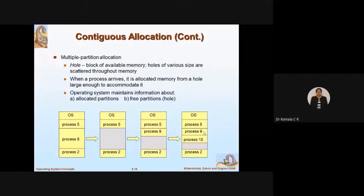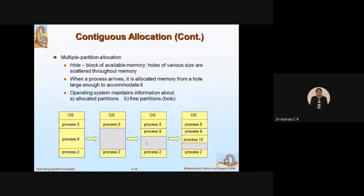Next is multiple partition allocation. A hole is a block of available memory. For example, in the first diagram, the OS allocates memory for processes 5, 8, and 2. After allocated processes, the remaining memory space is called a hole, where a new process can be placed. We have holes of large, medium, and low sizes depending on how much memory is left.